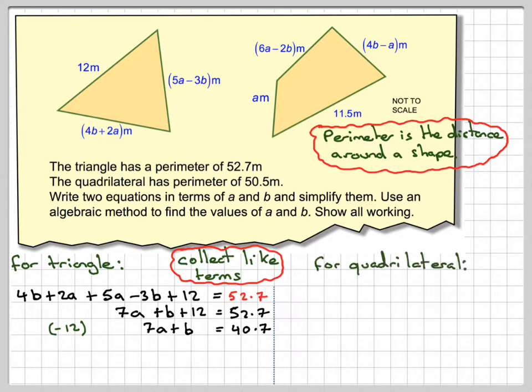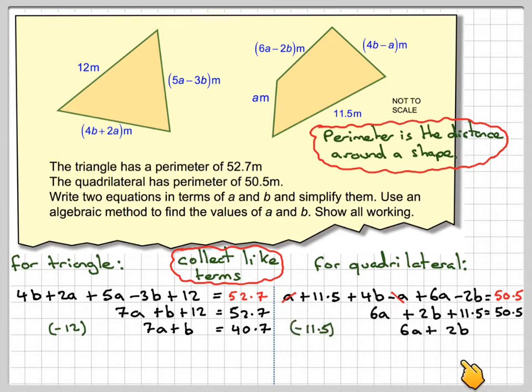For the quadrilateral, we have A + 11.5 + 4B - A + 6A - 2B = 50.5. The A and minus A cancel out, so we have 6A and then 4B minus 2B which is 2B, plus 11.5 equals 50.5. Subtracting 11.5 from both sides gives 6A + 2B = 39.